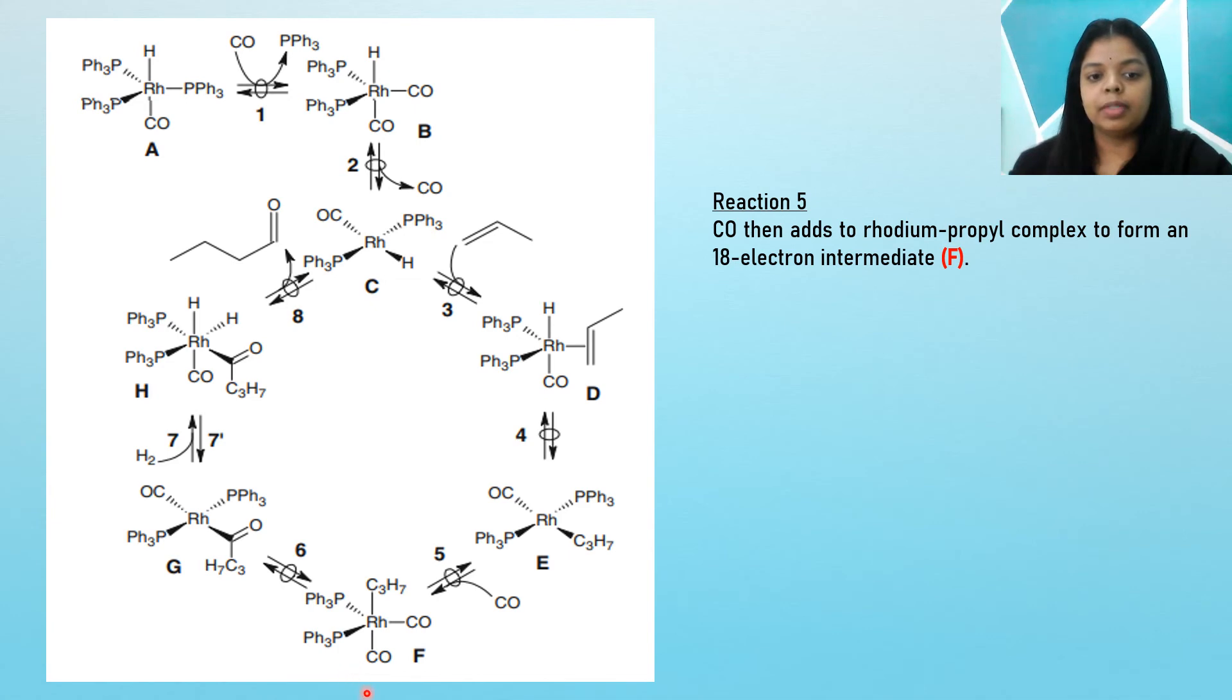From this intermediate, we will have a migratory insertion of the propyl to a carbonyl group which will lead to the formation of species G, also known as the acyl intermediate.